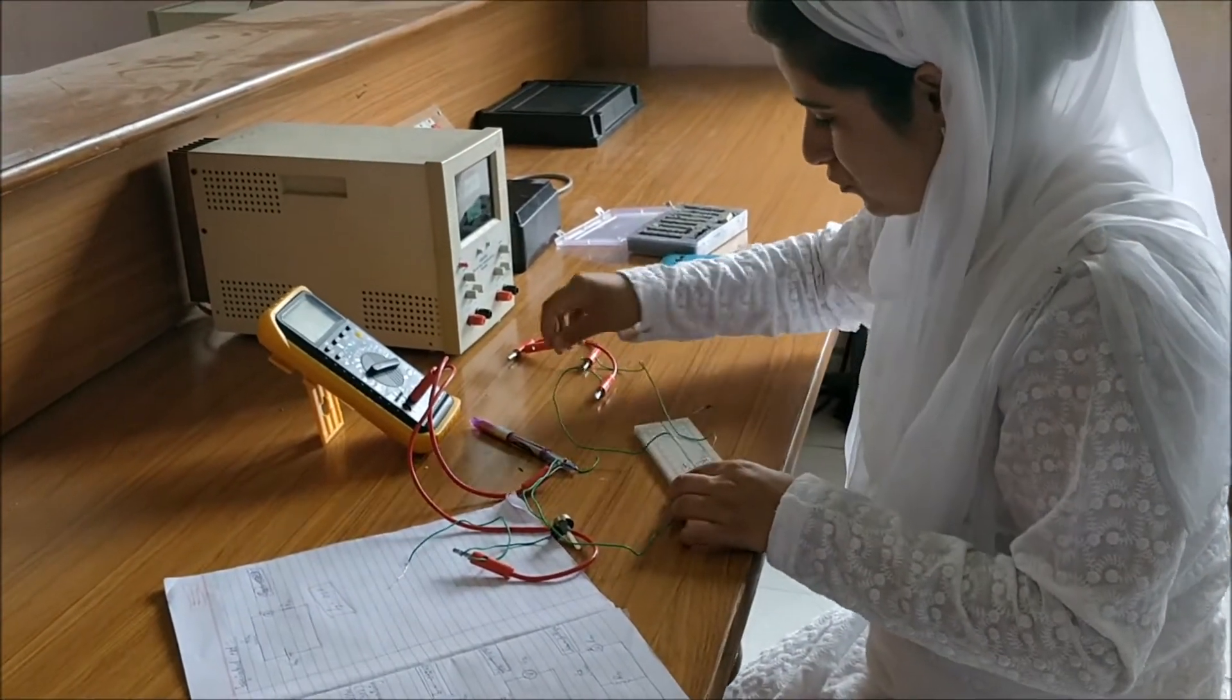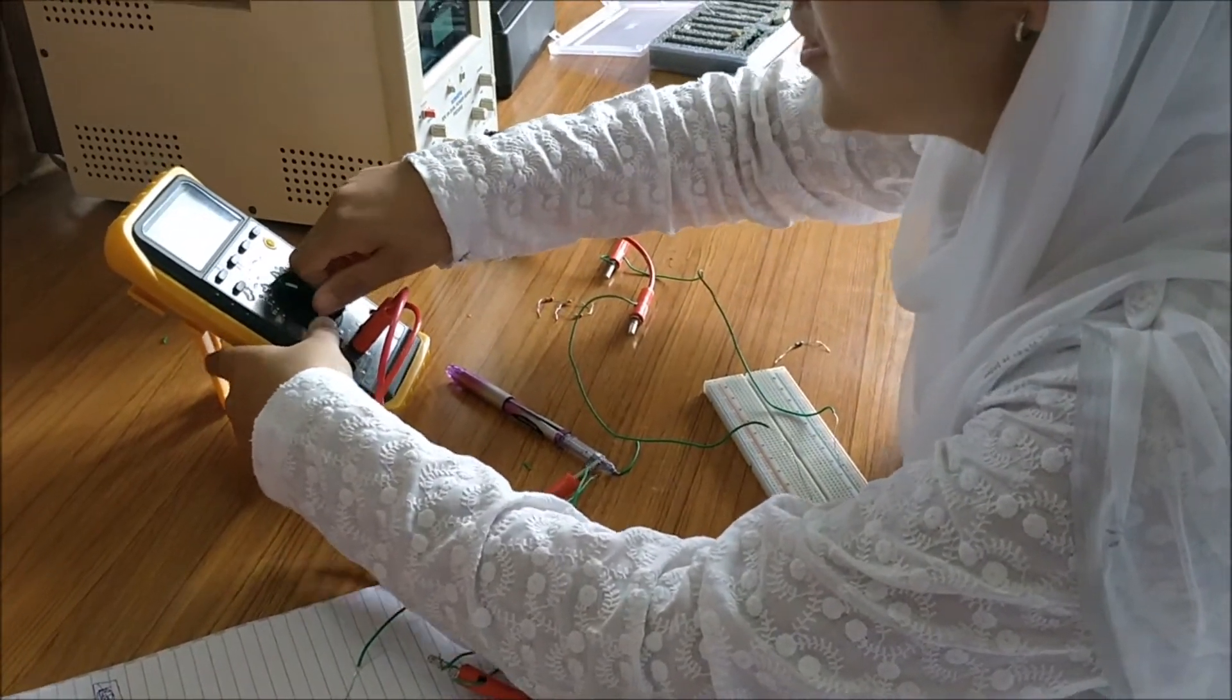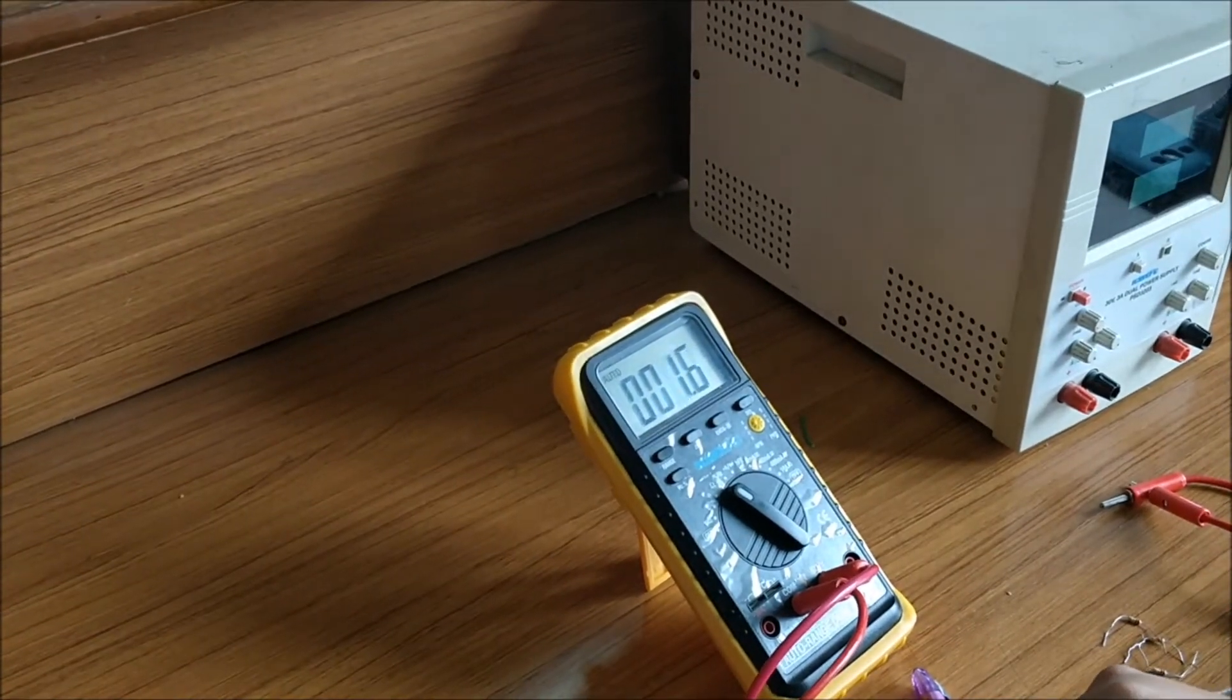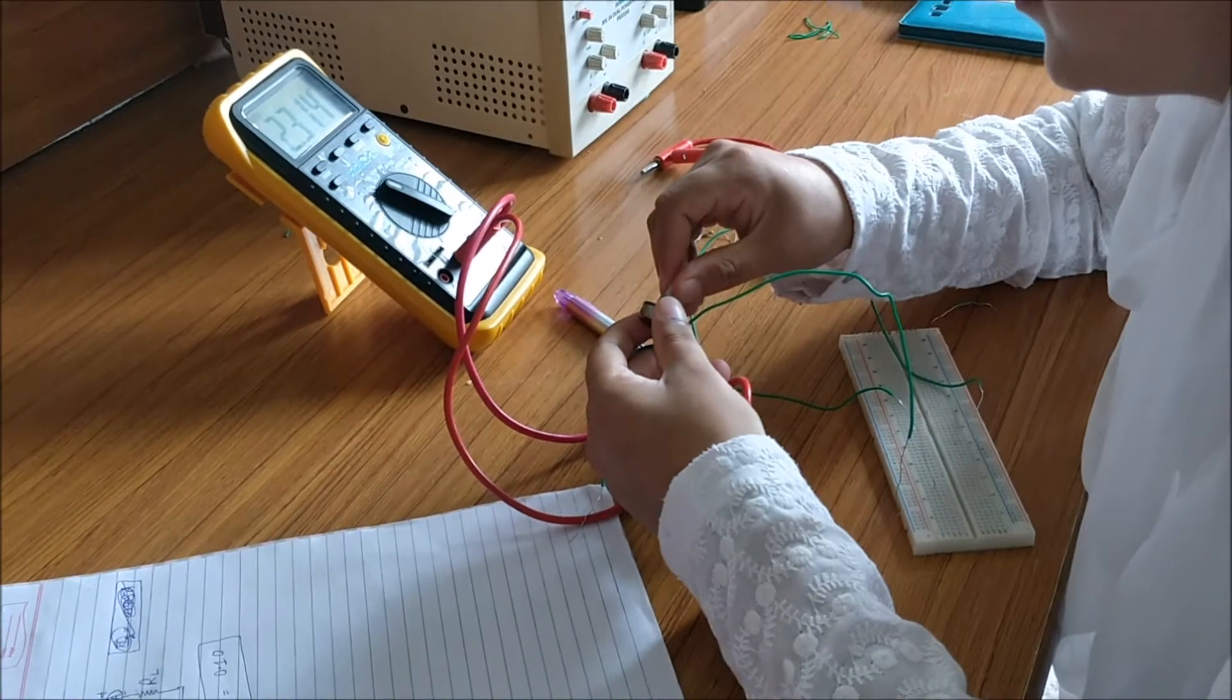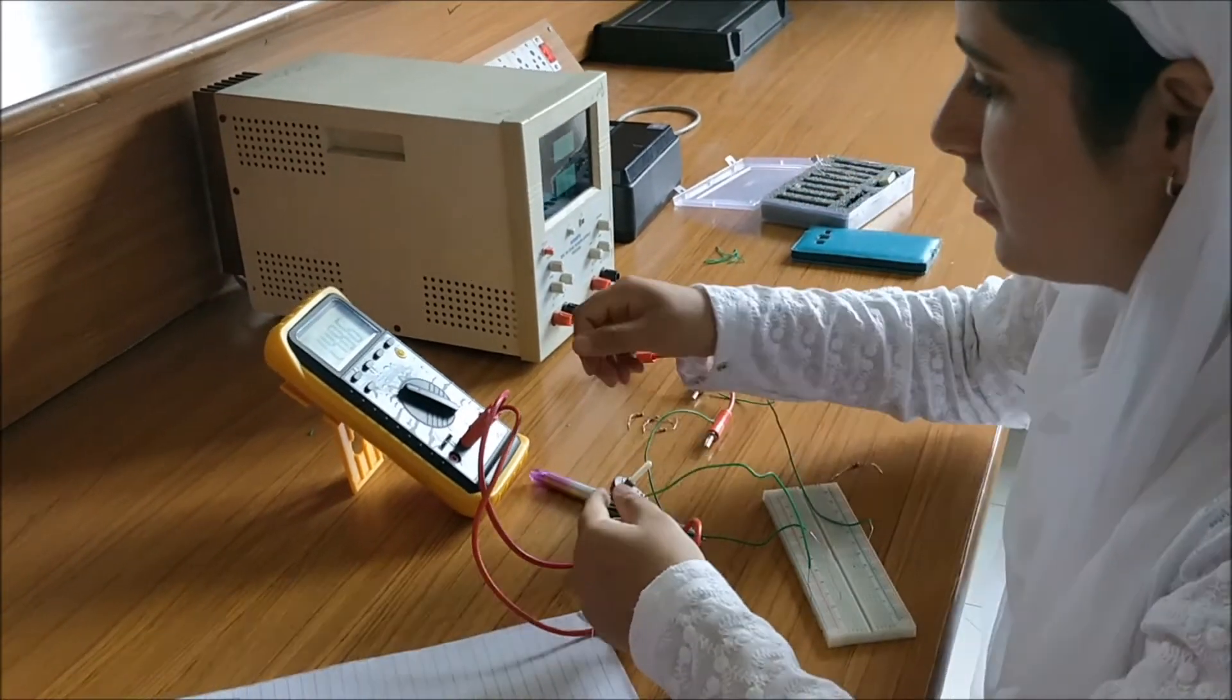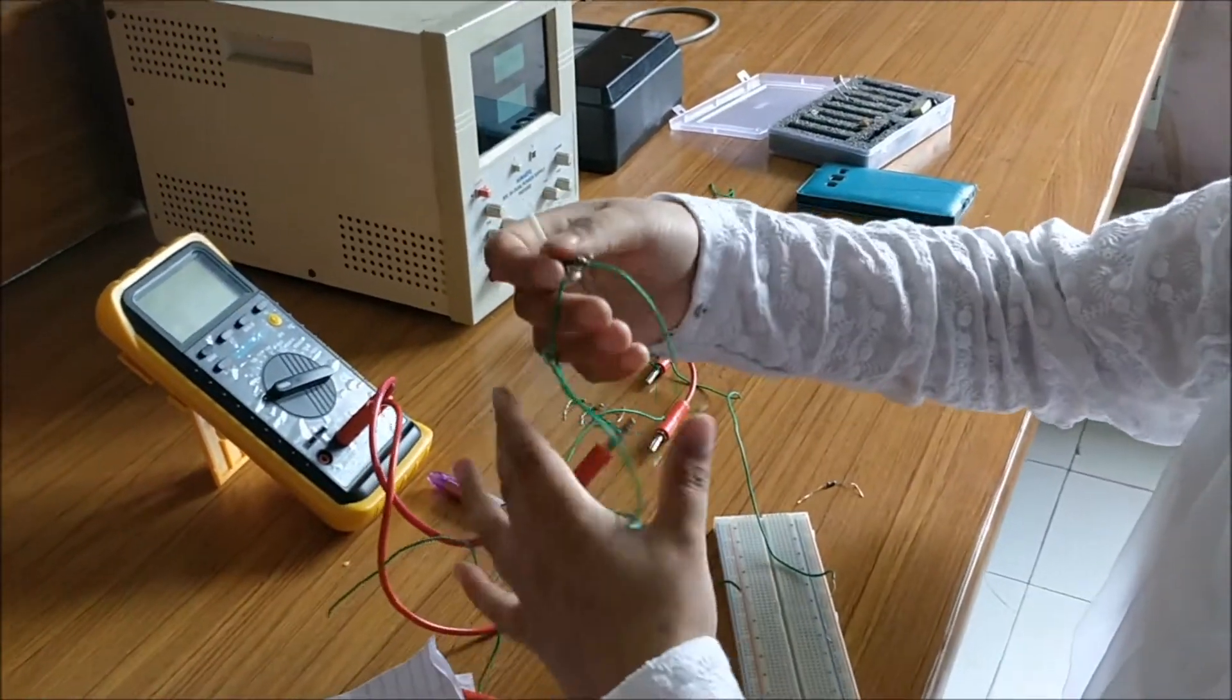Now we have to remove these resistances. We just have to set this RTH first. This is the approximate. We just set it at 1.47. Now we have to remove this.